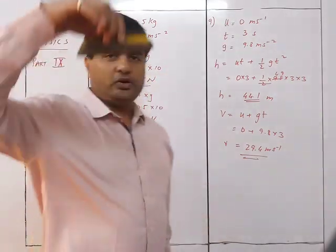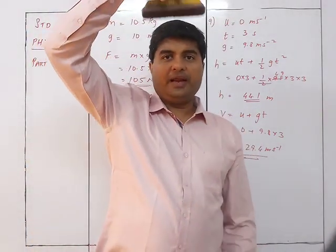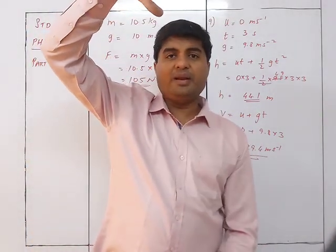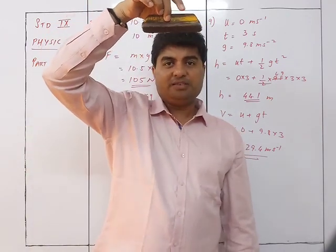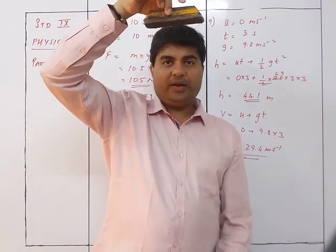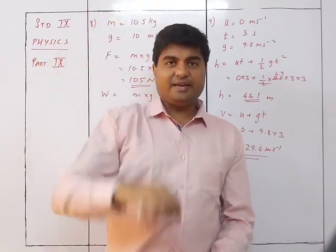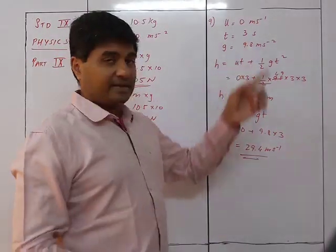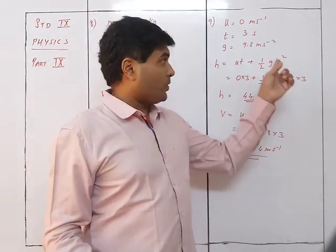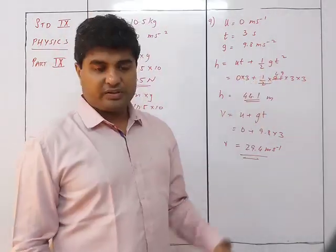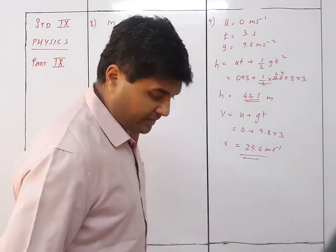Why is u = 0? Because the ball is simply released — at the moment of release the initial velocity is zero. It then falls down under gravity for 3 seconds with g = 9.8 m/s².